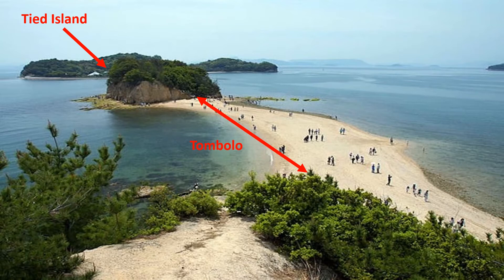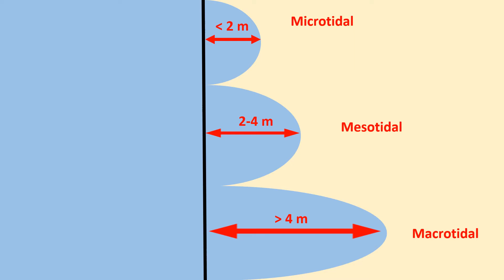Coasts can also be classified in other ways — as microtidal, mesotidal, or macrotidal. A microtidal coast is where the tidal range does not exceed 2 meters. A mesotidal coast is where the tidal range is between 2 and 4 meters. A macrotidal coast is where the tidal range exceeds 4 meters.